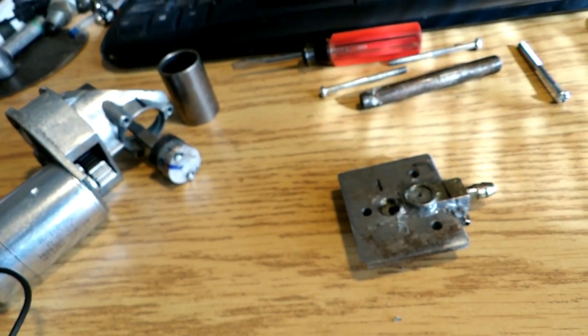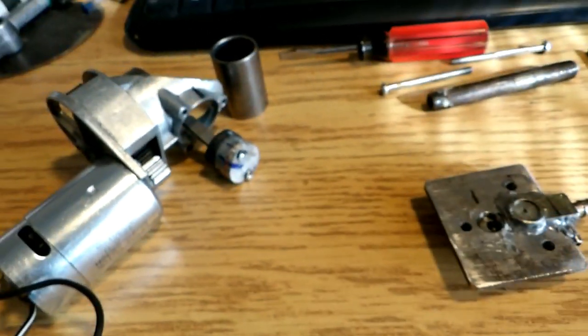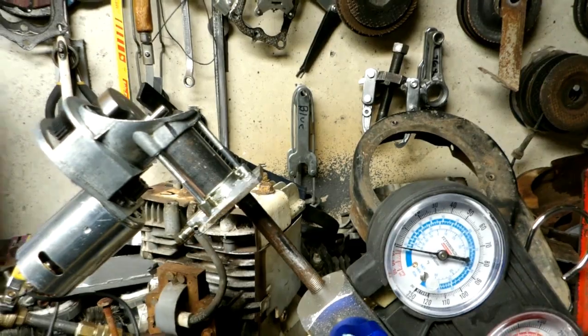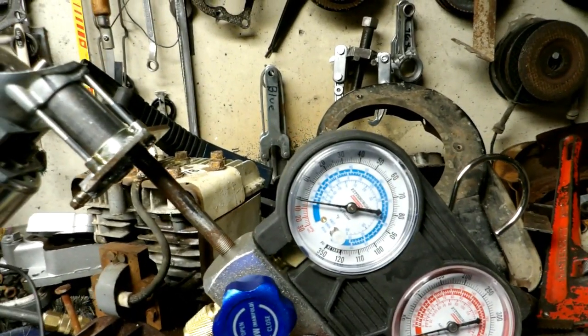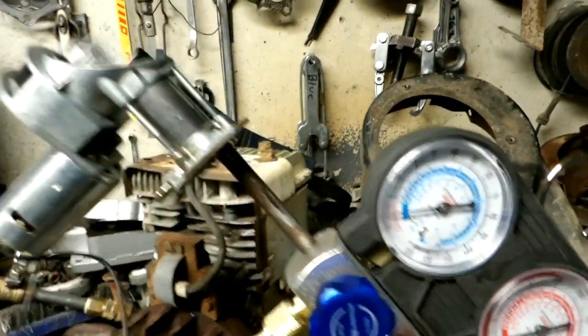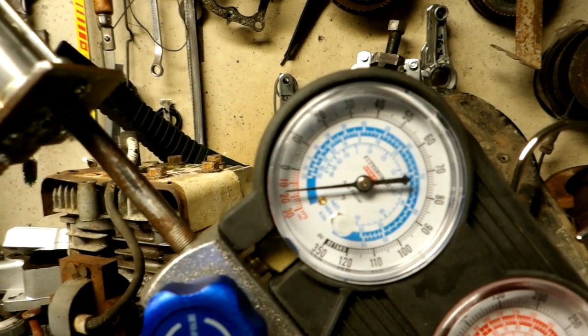As you can see in the next video when I run it, it does indeed work as a vacuum pump. I got the vacuum pump hooked up to a vacuum gauge here. We'll fire her up and see what kind of vacuum we get. It's like about 18 inches of mercury.